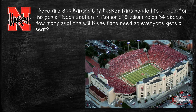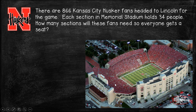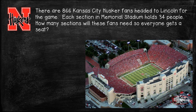So here's our first problem. There are 866 Kansas City Husker fans headed to Lincoln for the game. Each section in Memorial Stadium holds 34 people. So how many sections will these fans need so everyone gets a seat? Go ahead and tell me what operation this problem is — is it adding, subtracting, multiplying, or dividing? Set it up in your notebook now.